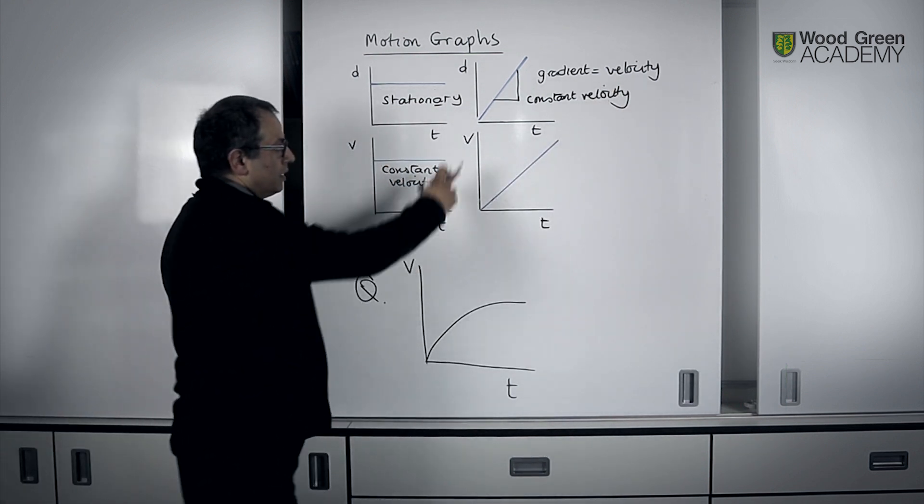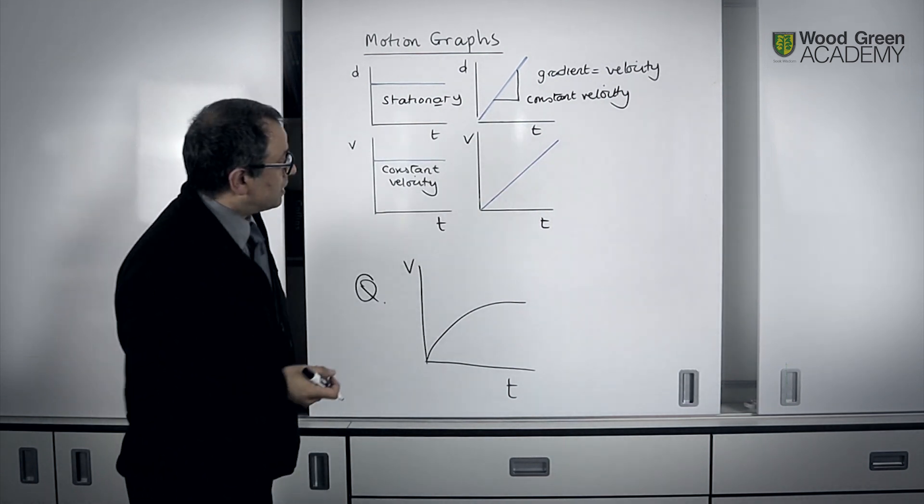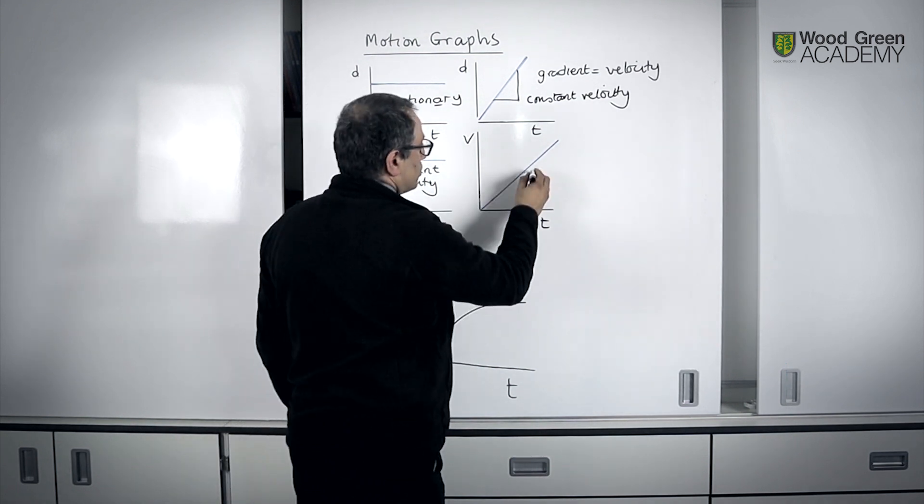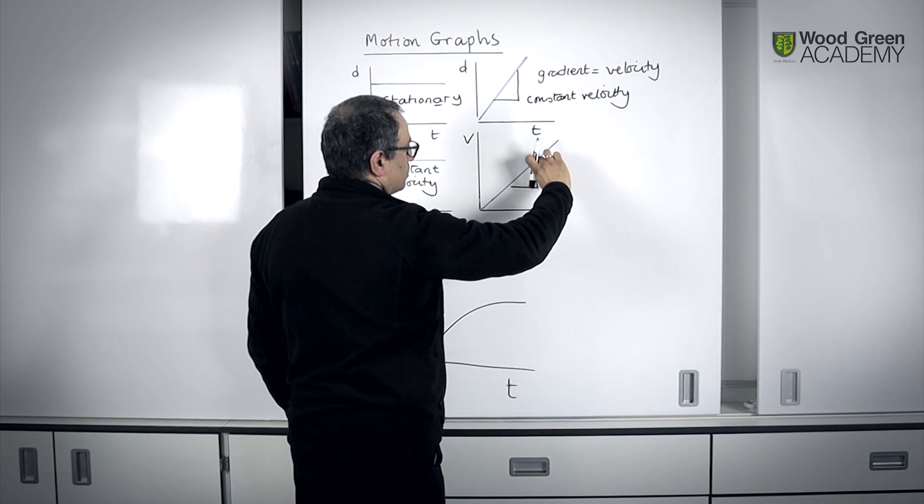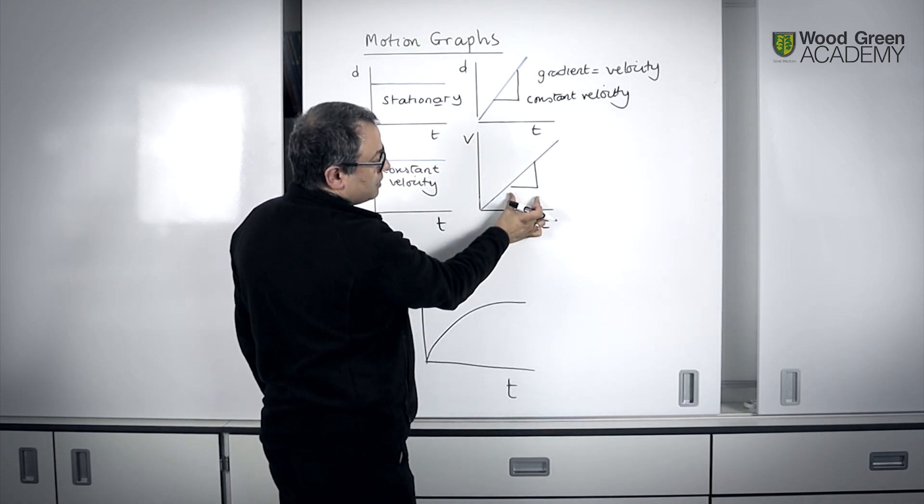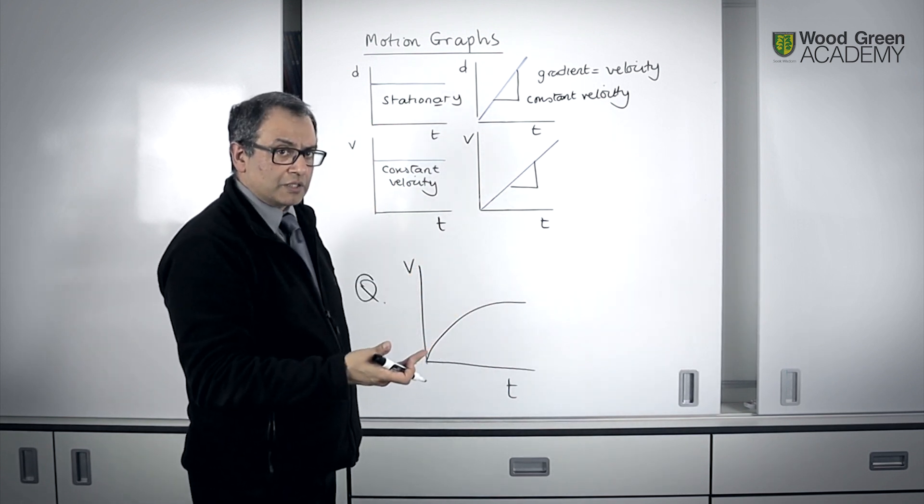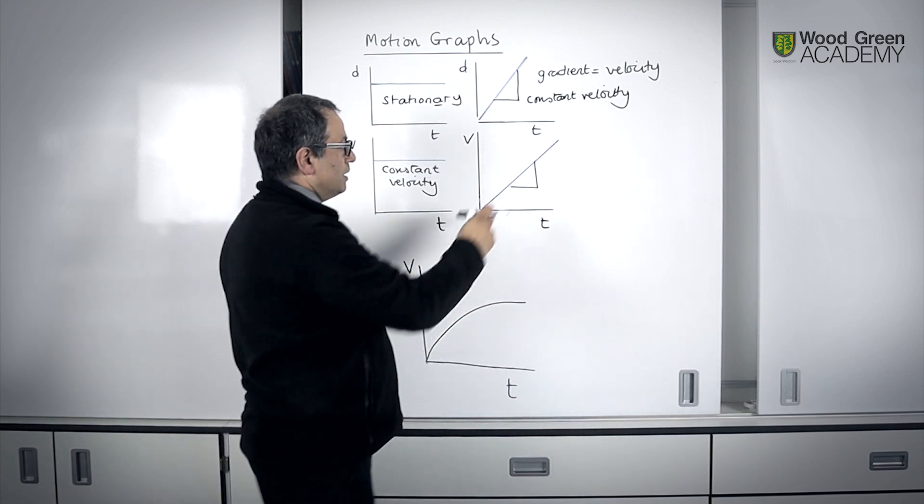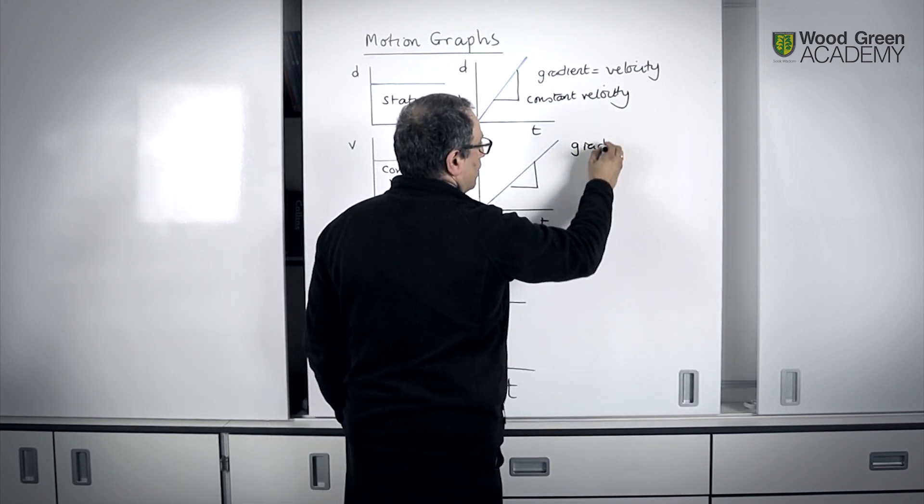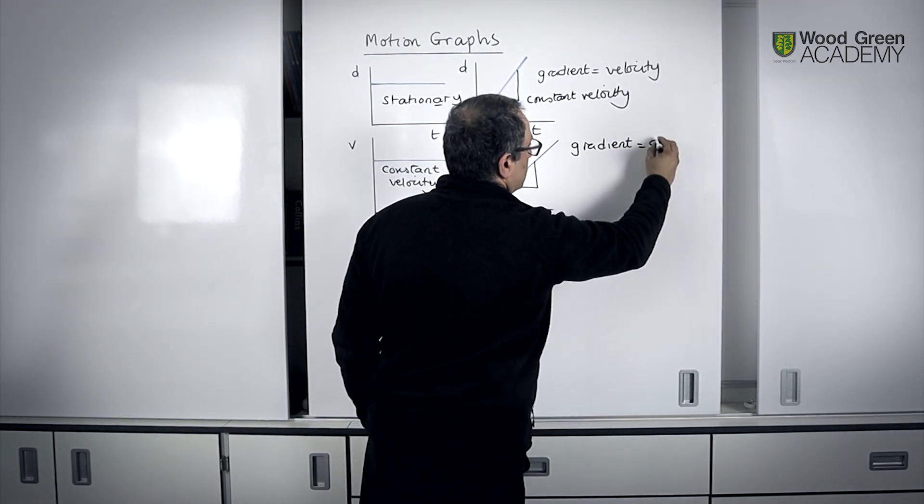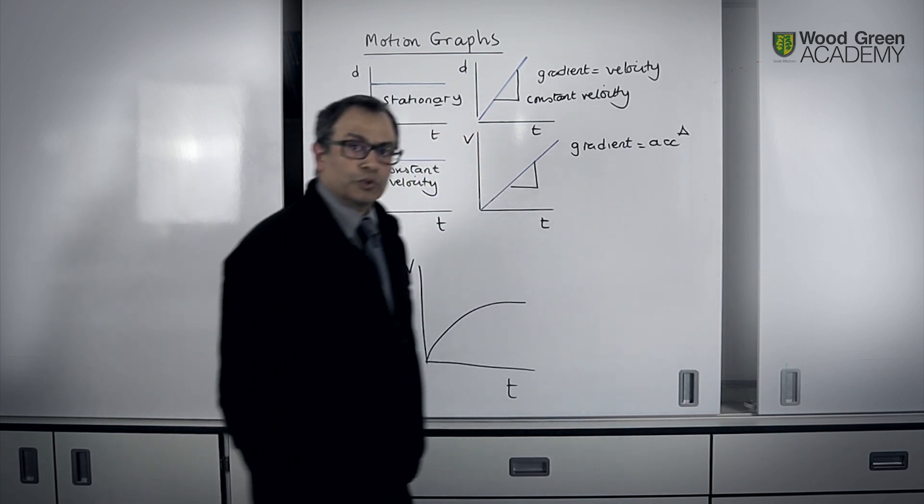In the one below, the velocity-time graph again looks the same as the one above, but the information that it provides is completely different. The gradient, too, is constant. You've got equal intervals of increase in velocity in equal intervals of time. So that's the rate of change of velocity is constant. So, in this particular case, it's accelerating, and the gradient, or the slope of the graph, represents the acceleration. I'll just use acceleration with a little triangle to shorten it.